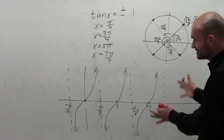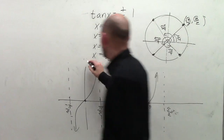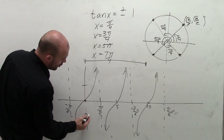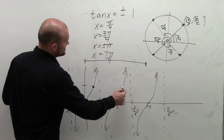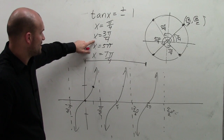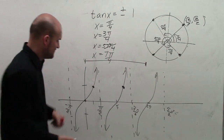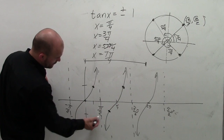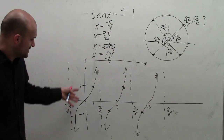This is what the tangent function looks like, and remember it keeps on repeating in the positive and negative direction. We said there are four solutions between 0 and 2 pi when tangent equals plus or minus 1. It equals positive 1 at pi over 4 and at 5 pi over 4, and it equals negative 1 at 3 pi over 4 and at 7 pi over 4. So you can see there are four solutions.